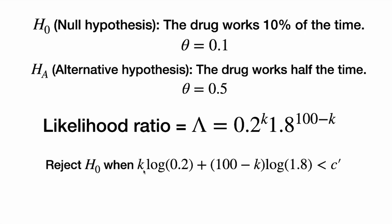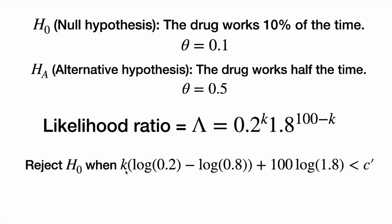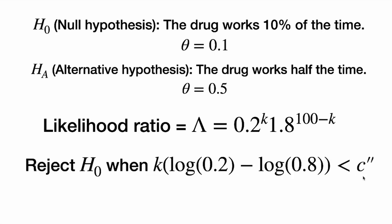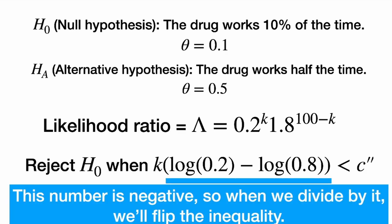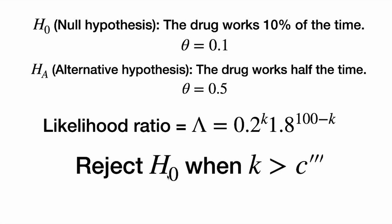We use properties of logarithms to bring the k's out in front. Then we factor out the k, giving us k times a number plus 100 times a number is less than c prime. We subtract the constant from both sides to get a new constant c double prime. The term log(0.2) minus log(1.8) is a negative number, so when we divide through by it, the inequality flips. We divide by this number, and get that we reject the null hypothesis when k is greater than some constant c triple prime.